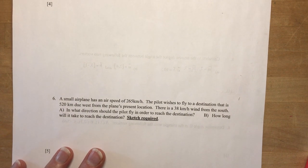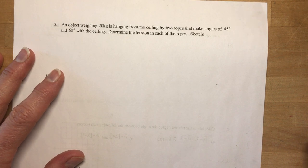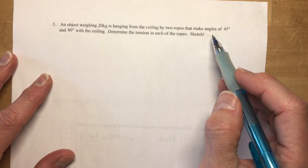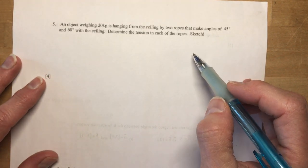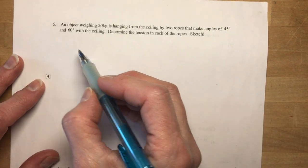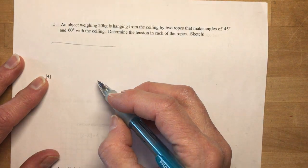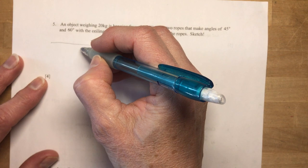Number 5 starts with a force question. An object weighing 20 kilograms is hanging from a ceiling by two ropes that make angles of 45 and 60 degrees with the ceiling. Determine the tension in each rope. Make a sketch. Okay, I'm going to freehand this. So it's going to be like this. Very bad straight line.